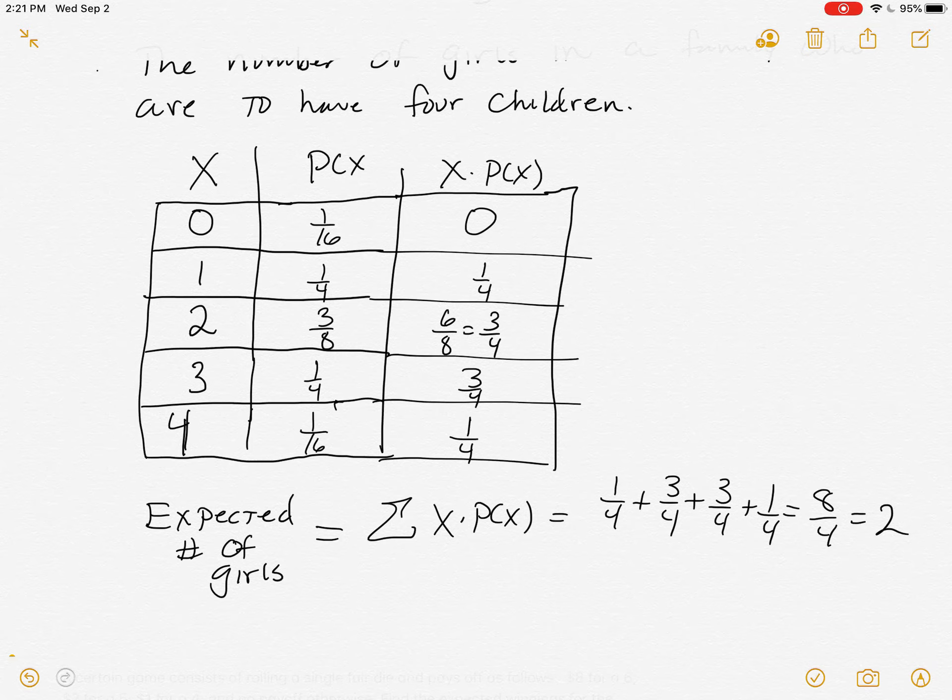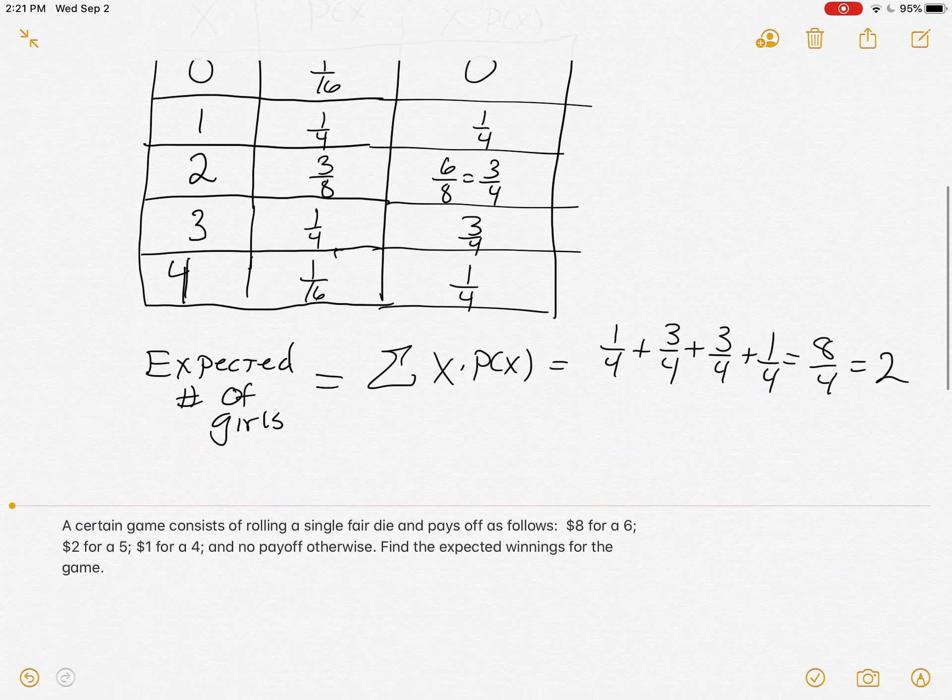Now you can say to yourself, why do we do all of that if we knew the answer was just going to be two? And the reason why you did all of that was because we wanted to have a problem that you could wrap your brain around that the answer made complete sense to you. Yeah, of course. If boys and girls are equally likely, we would expect two girls. And so that's exactly what expected value should do.